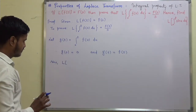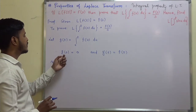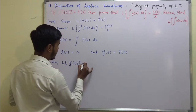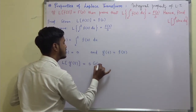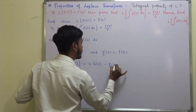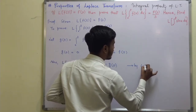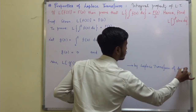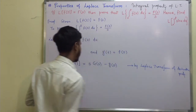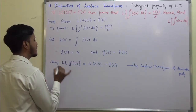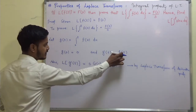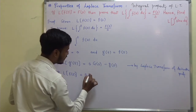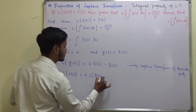Now, g(t) is defined, g(0) is 0, and g'(t) is f(t). By the Laplace transform derivative property, the Laplace transform of g'(t) equals s·G(s) minus g(0), where G(s) denotes the Laplace transform of g(t).